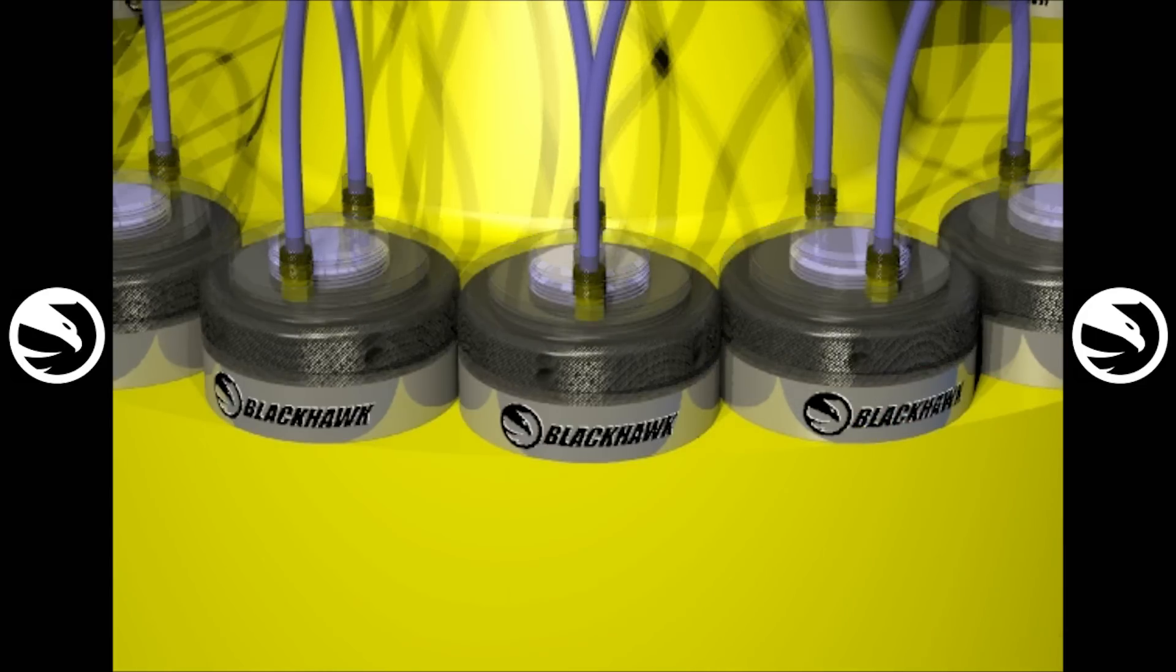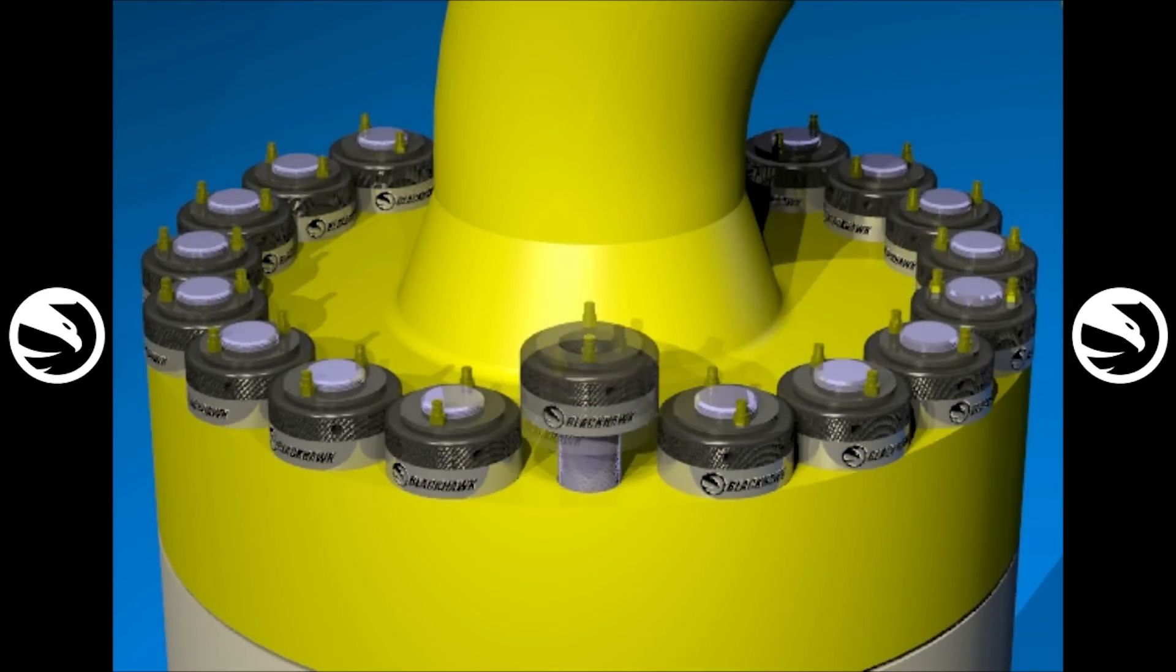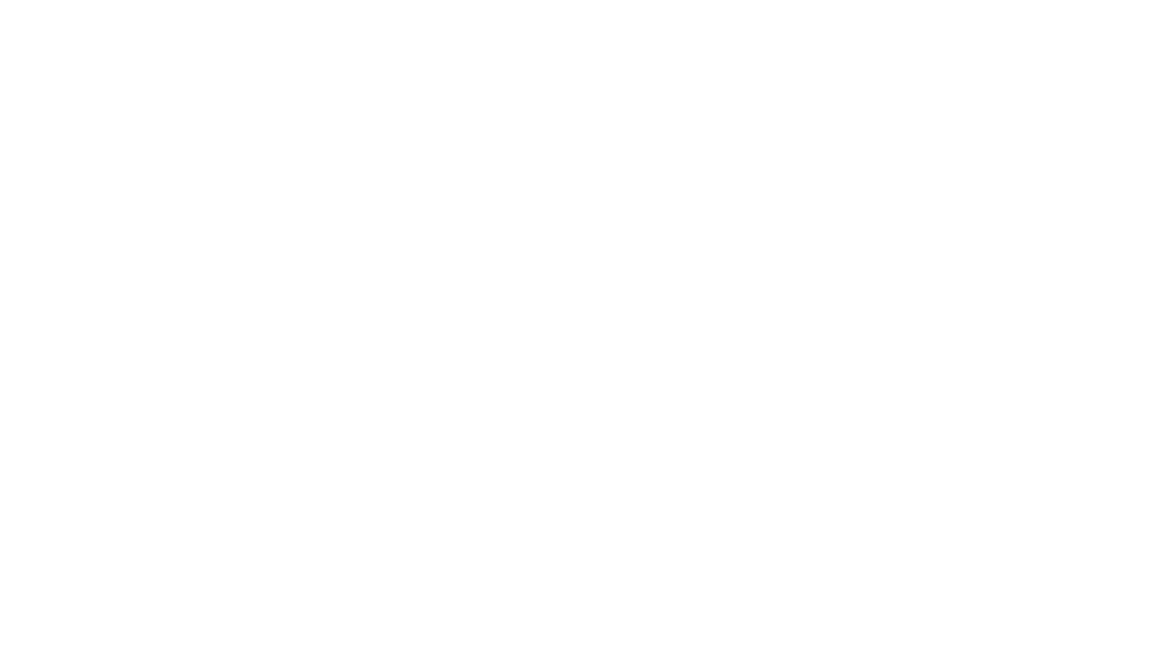Since Blackhawk nuts rely on hydraulic axial pressure to load the joint instead of turning the nut, the fear of galling is completely eliminated. Say goodbye to bolting discovery work that plagues the turnaround schedule.